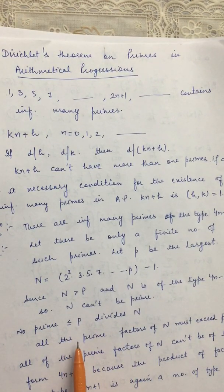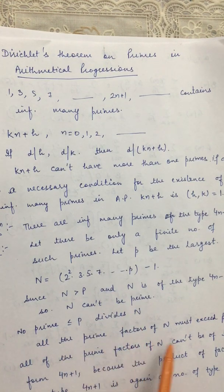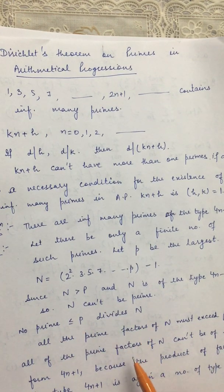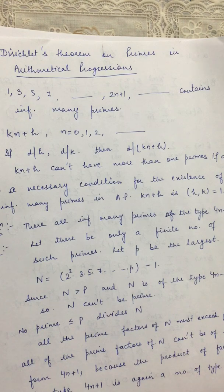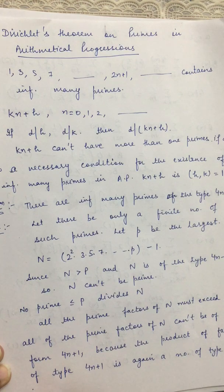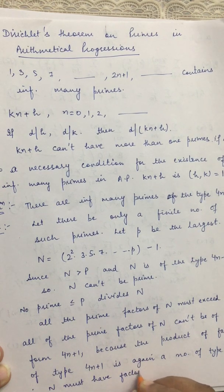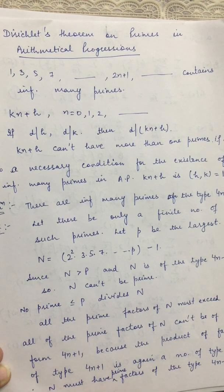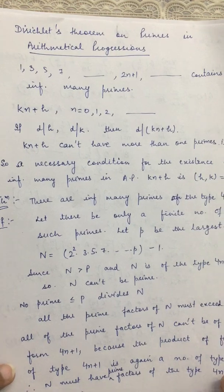Now N itself is not prime, and all prime factors of N must exceed P since no prime ≤ P divides N. Yet some prime factor of N must be of the type 4n−1. That means there exist primes of the type 4n−1 exceeding P, which is a contradiction. Therefore, there exist infinitely many primes of the type 4n−1.